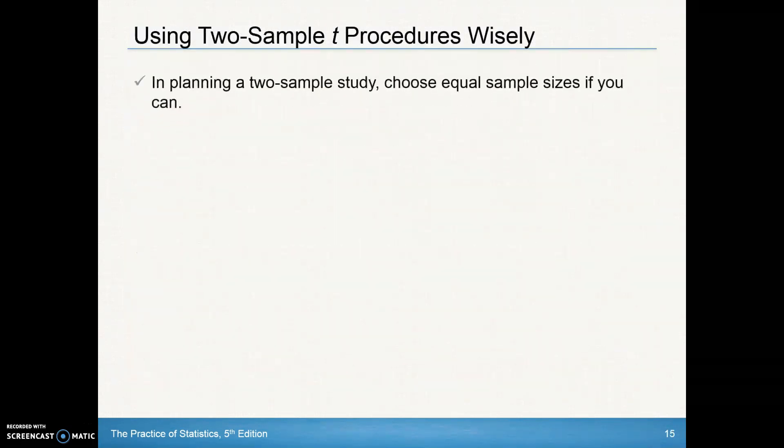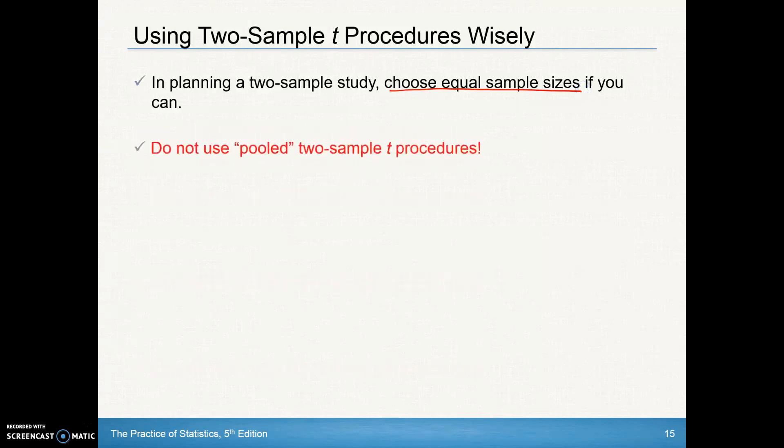Using two-sample t procedures wisely: in planning a two-sample study, try as best as you can to choose equal sample sizes. Sometimes that's not always possible, but that's always our goal—to keep those sample sizes equal because we don't want to pool the two-sample t procedures, especially if those two sample sizes are significantly different.